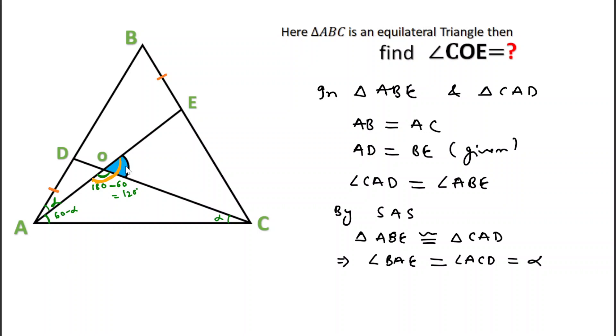The blue angle, that is angle COE, equals 180 minus 120. Since in a straight line total angle is 180, and if we subtract this angle that is 120, then we get the blue angle.